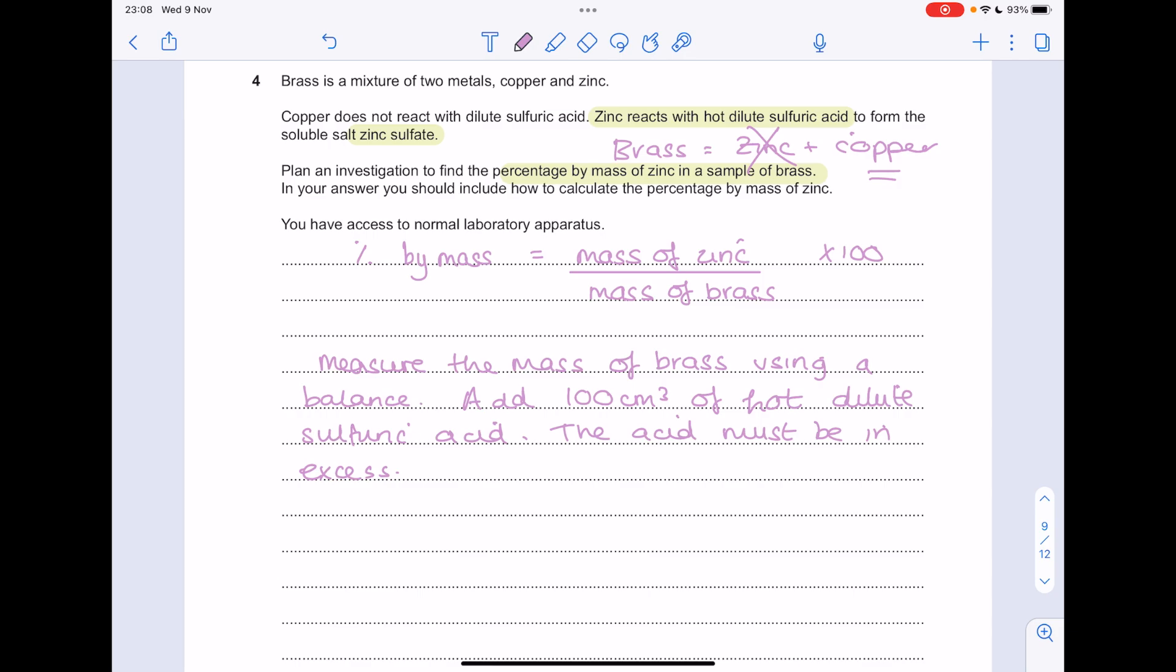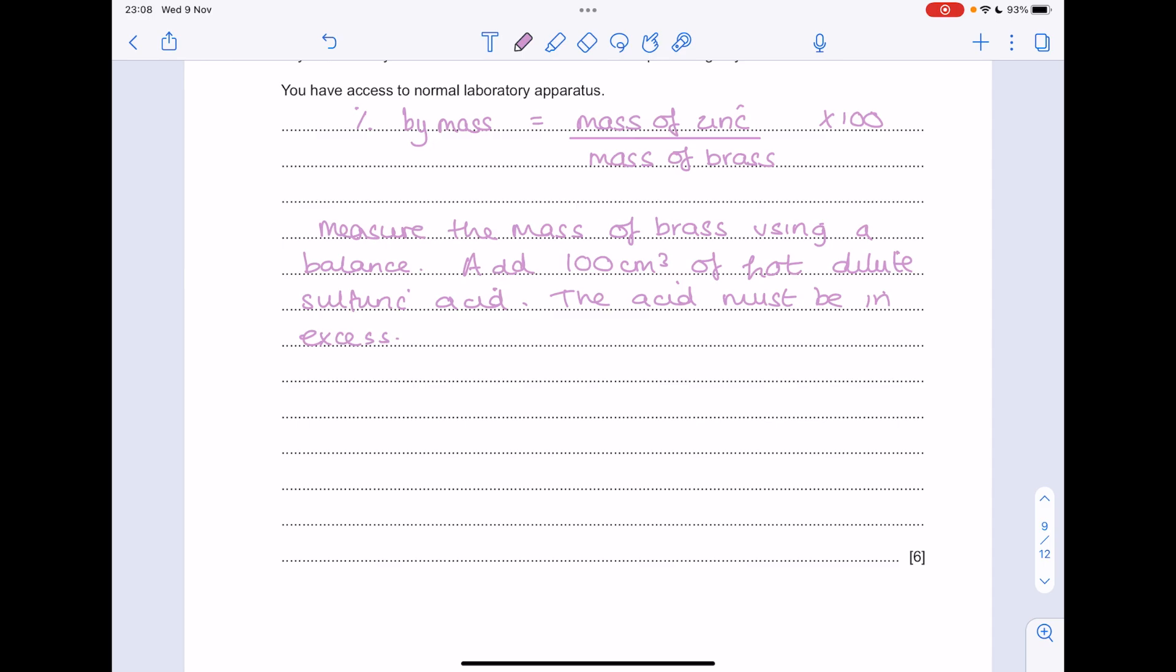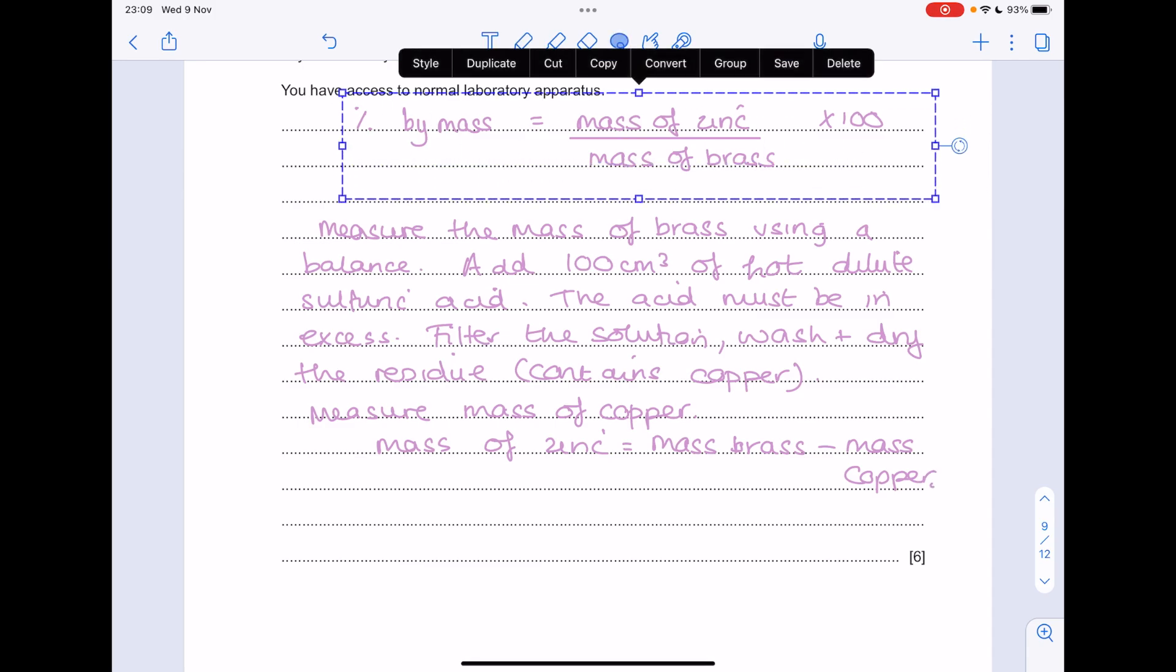But how do we work out the mass of copper? In order to do that, you want to filter the solution, wash and dry the residue, which, remember, contains the copper. It needs to be dry so you don't have any excess water. Measure the mass of that copper residue, and then do mass of zinc. It must therefore be the mass of the original brass minus the mass of copper. And at that point, you can substitute those values into this equation here: percentage by mass equals mass of zinc divided by the mass of the brass times by 100.